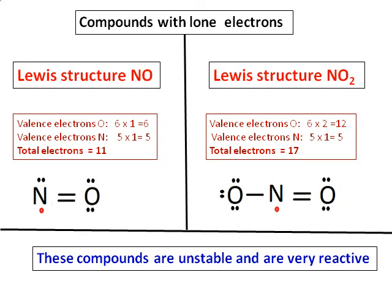We covered three kinds of special cases: extended octet where it can have more than 8 electrons, and single electron with an incomplete octet. These are the special cases of Lewis structure.